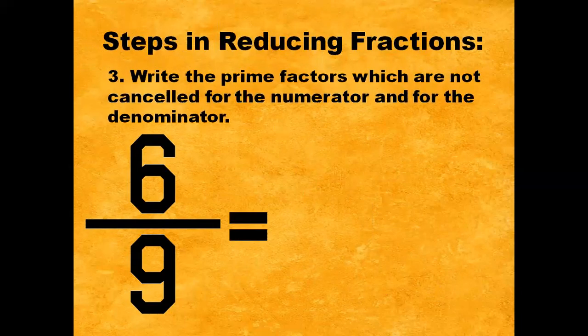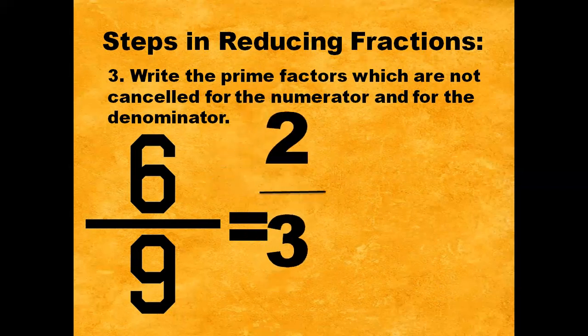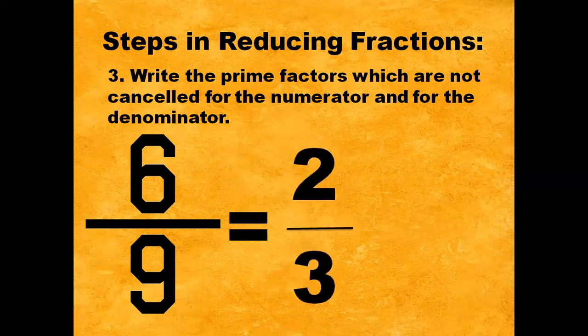Step number 3: Write the prime factors which are not cancelled for the numerator and for the denominator. So, the answer is 2/3. In short, the lowest term for 6/9 is 2/3.